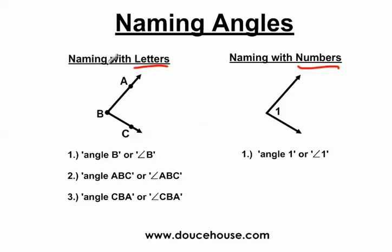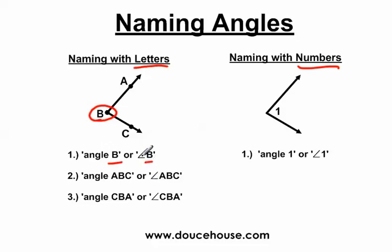This is the hardest part about naming angles — naming them using letters. This is the same angle from the previous slide, just shrunk down a little bit. The vertex is the common endpoint between these two rays. You can use the vertex to name an angle, so we can call this angle B, or use the angle symbol and call it angle B. The angle symbol looks like an angle and means the word 'angle,' so you'll generally see angles named using the symbol more than the word.